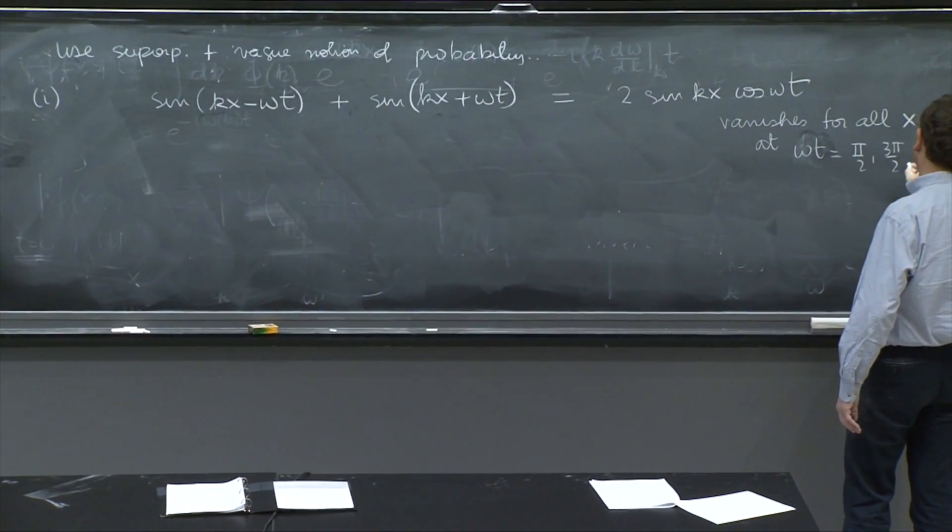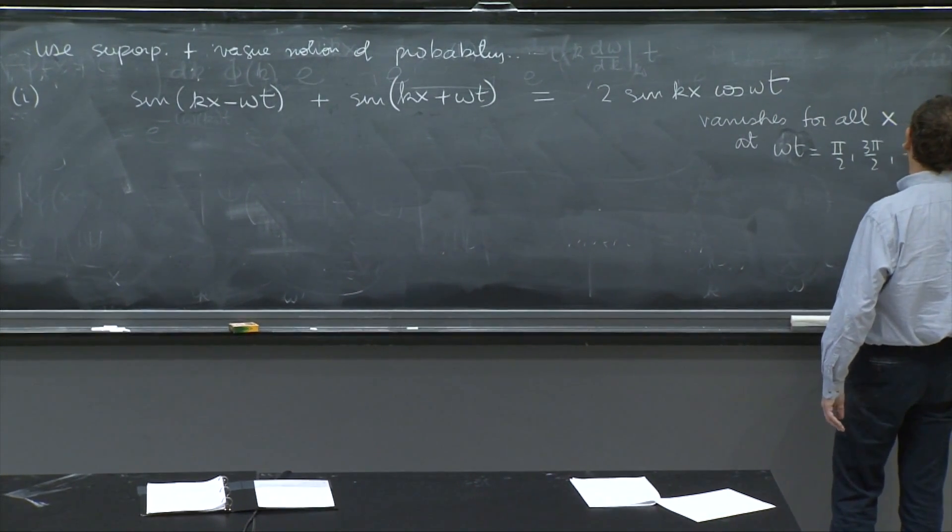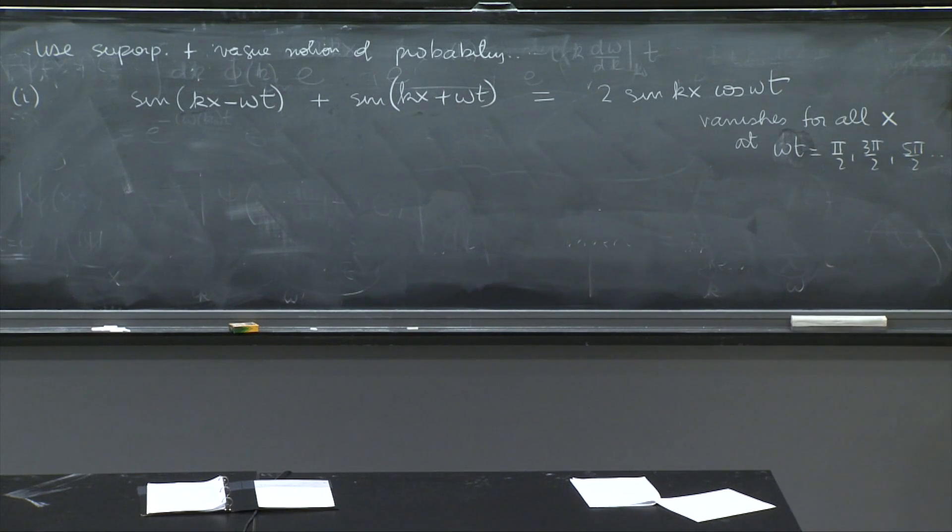for all x at omega t equal to pi over 2, 3 pi over 2, 5 pi over 2. So at all those times, the wave is identically zero. The particle has disappeared. There's no probability of a particle.